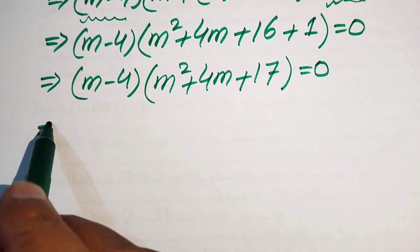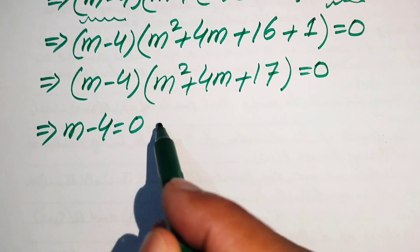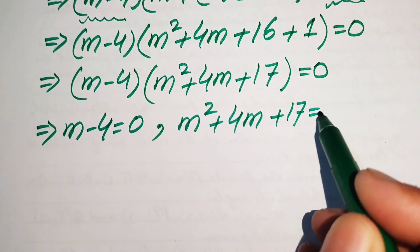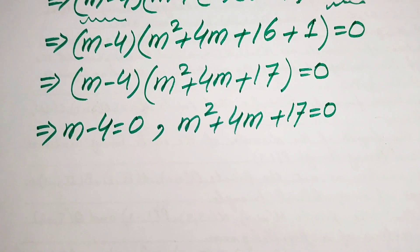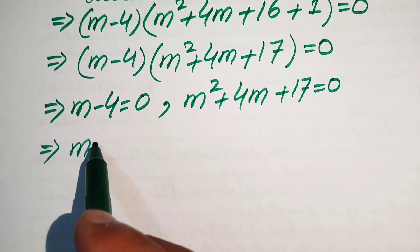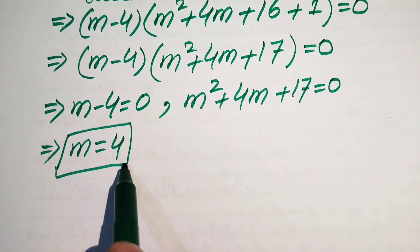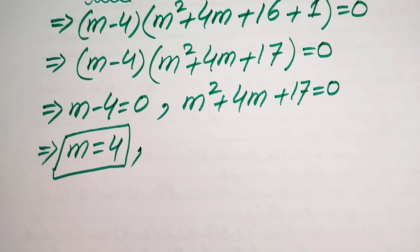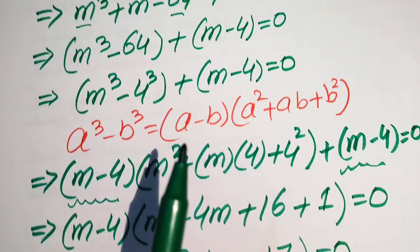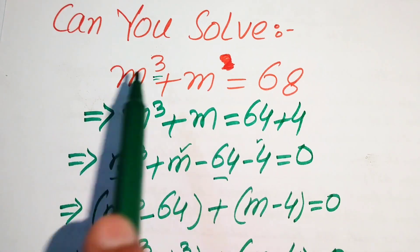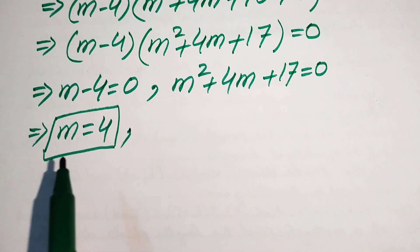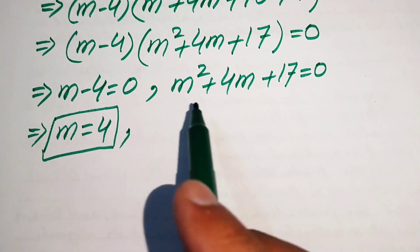We now split this into two cases. Case 1: m - 4 = 0, which gives m = 4 — our first real solution. Case 2: m² + 4m + 17 = 0. Since the original equation is degree 3, it has 3 roots total, so we need to find the remaining two roots from this quadratic.